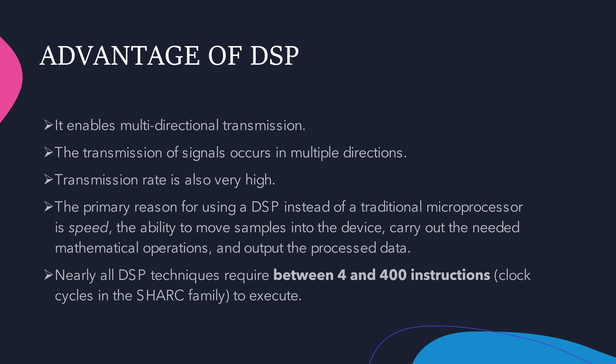The transmission rate is also very high. The primary reason for using DSP instead of a traditional microprocessor is speed — the ability to move samples into the device, carry out the needed mathematical operations, and output the processed data.